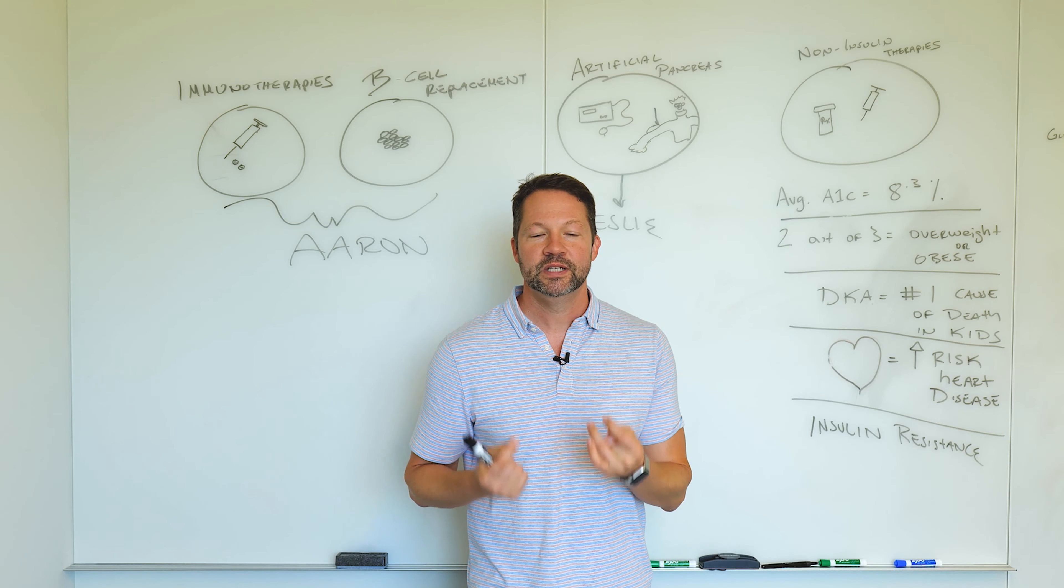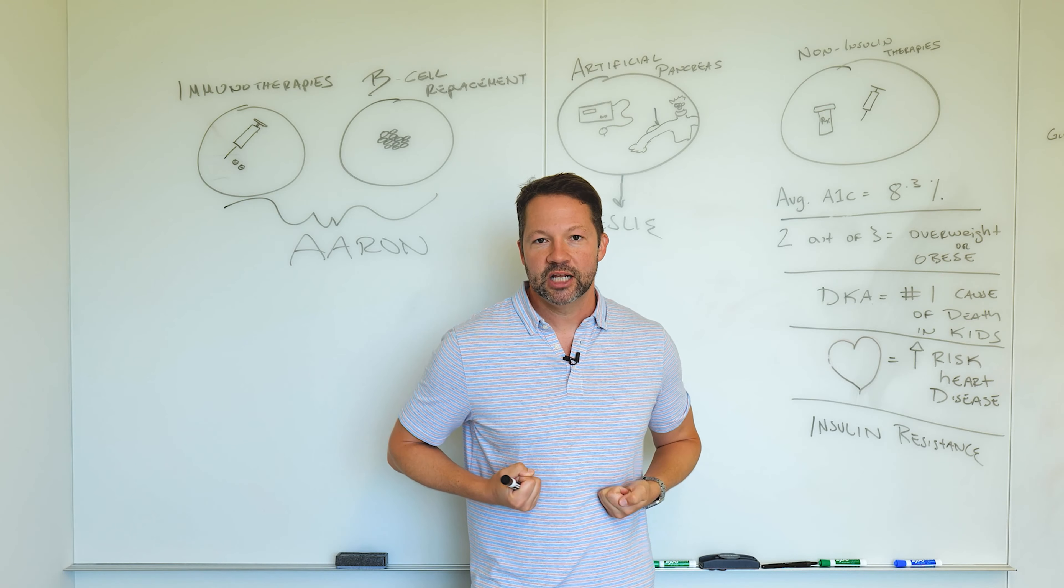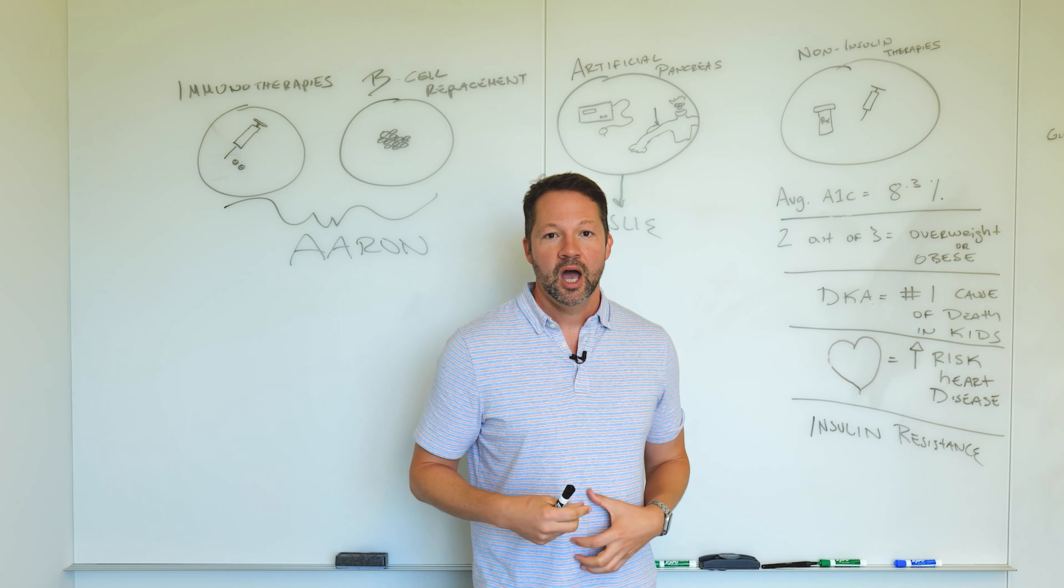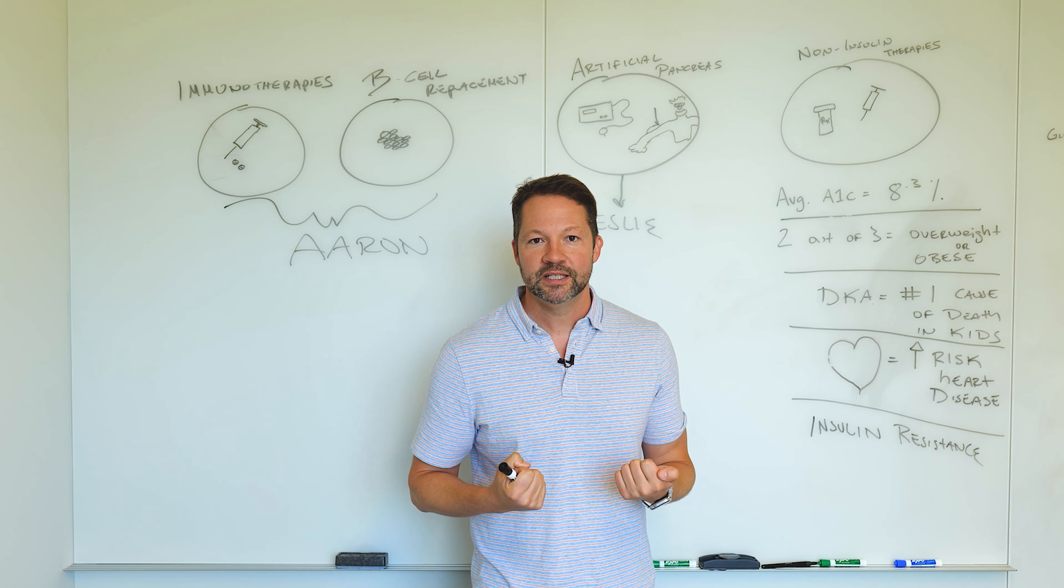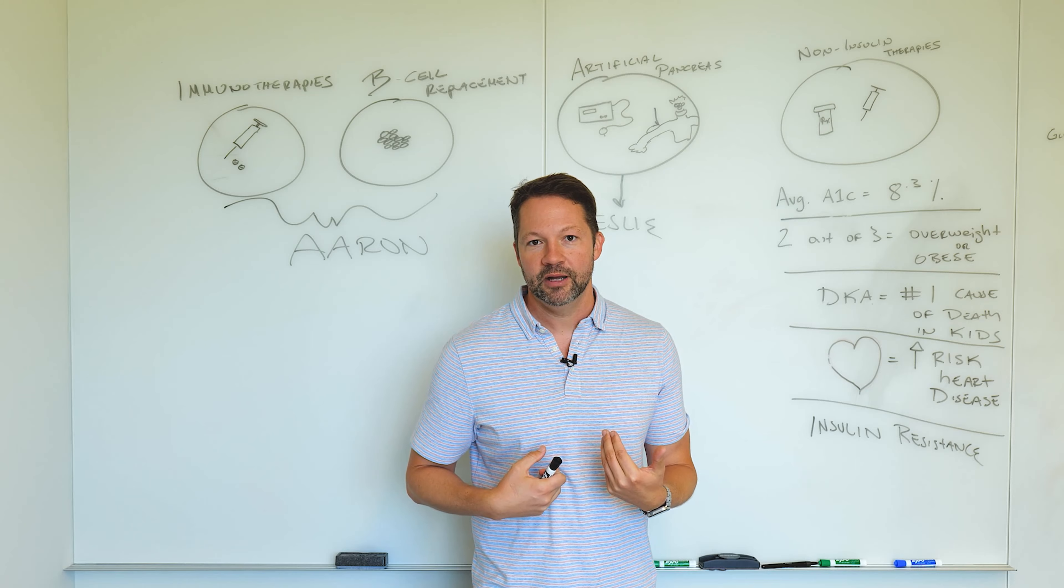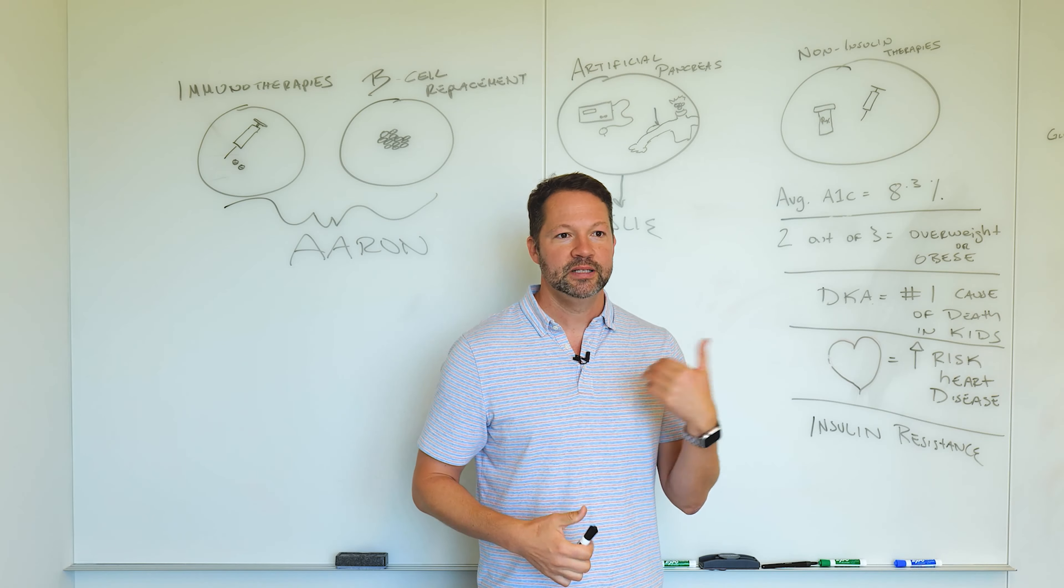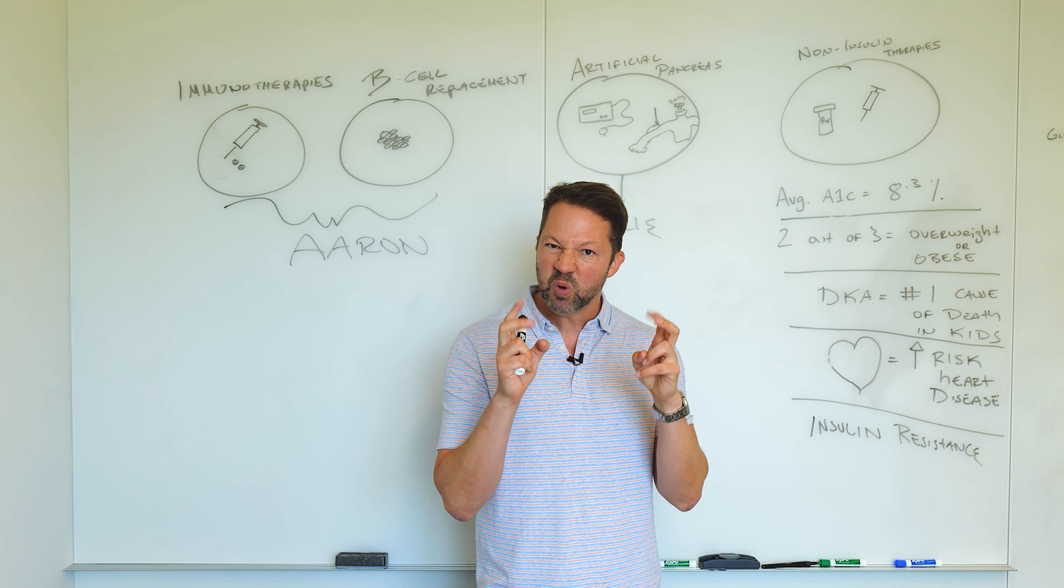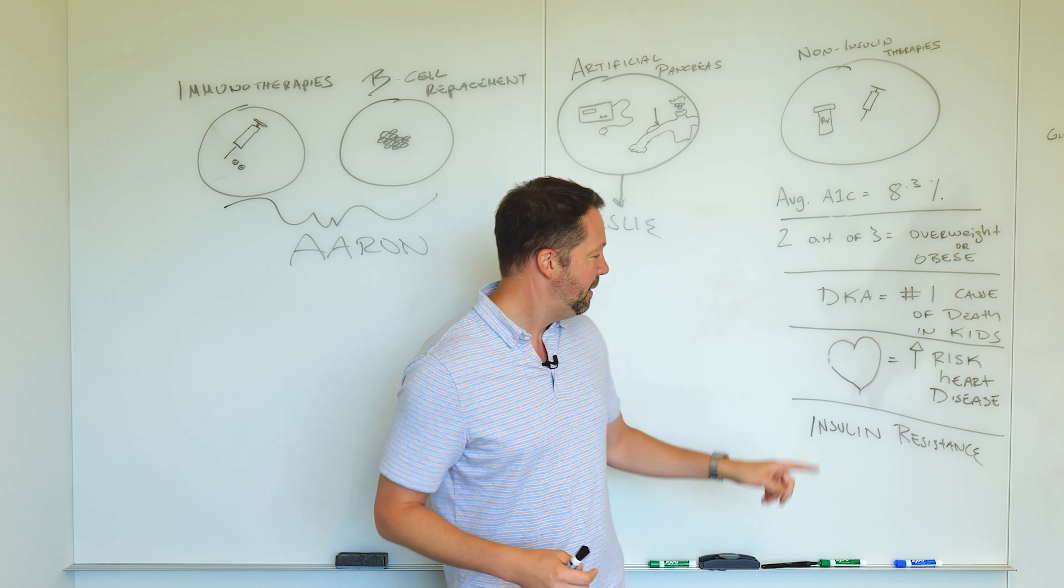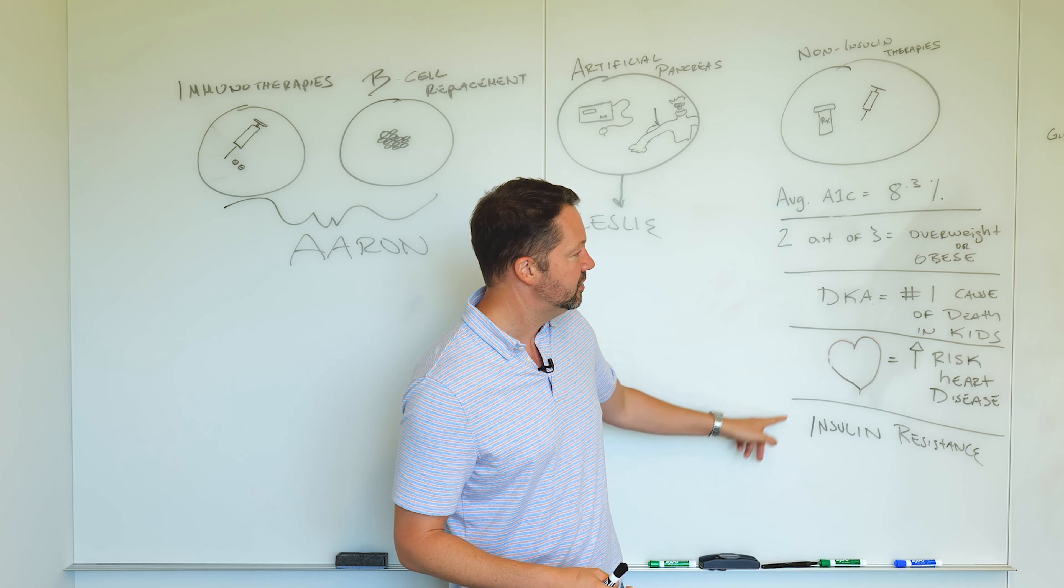we actually have insulin resistance that because we inject our insulin into the fat and into basically the fat tissue, it takes large amounts of insulin, much larger than you would need if it was coming from your pancreas. So any type one out there is probably taking twice as much insulin as they would normally take from their pancreas. And those large amounts of insulin can make you resistant to insulin and may actually lead to cardiovascular disease.